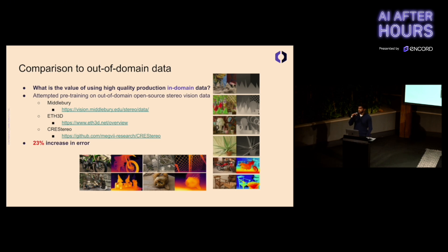A question you might ask is, what's unique about our data? What's the value of using this high-quality production in-domain data? Because stereo vision is a task well-studied in the literature, and there exist many open-source stereo vision data sets. We test this hypothesis by pre-training on three popular open-source data sets and find a 23% increase in error. So we see poor performance, and this validates the quality and the value of our production in-domain data.